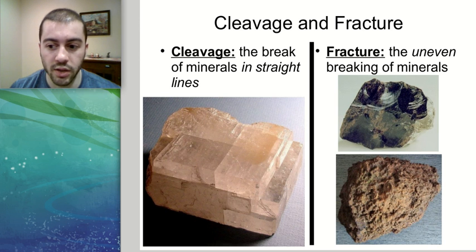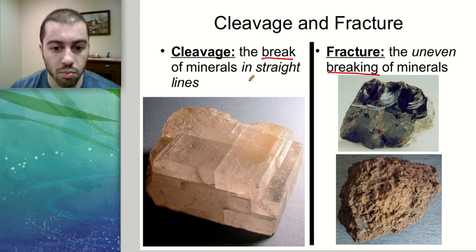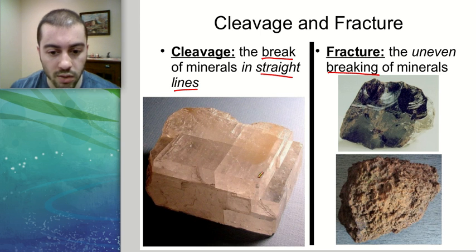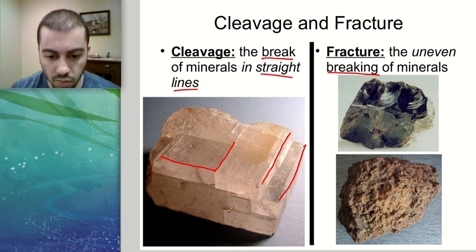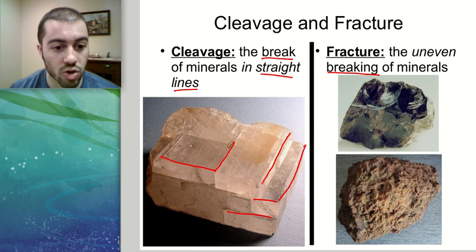The next characteristics are cleavage and fracture, both of which have to do with how a mineral breaks. If a mineral has cleavage, it breaks in straight lines — we can draw a bunch of straight lines along the mineral showing how it broke. This mineral example has a whole bunch of straight line breaks, showing it has cleavage.